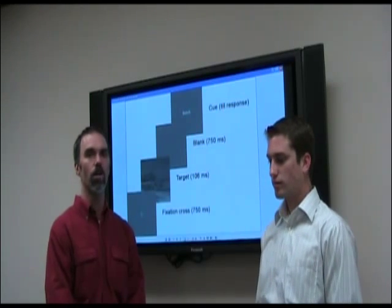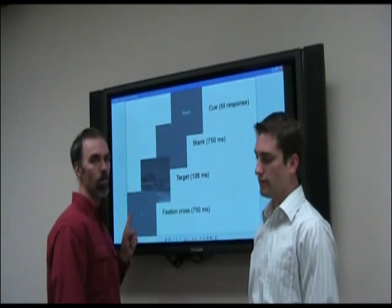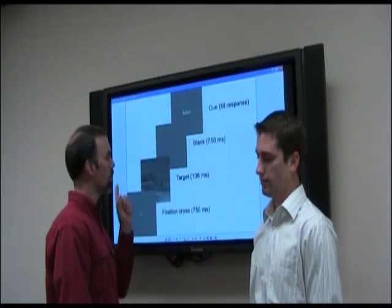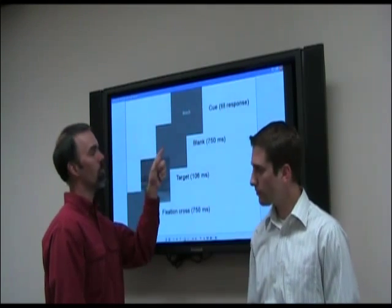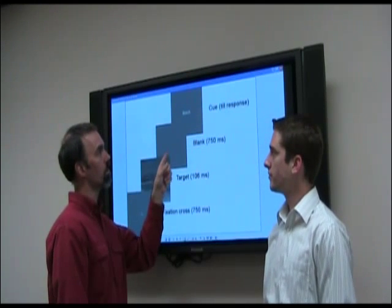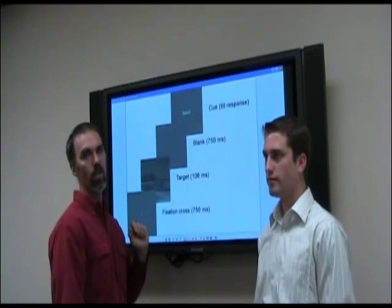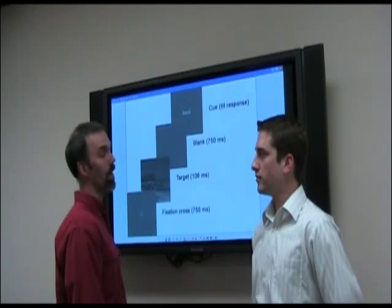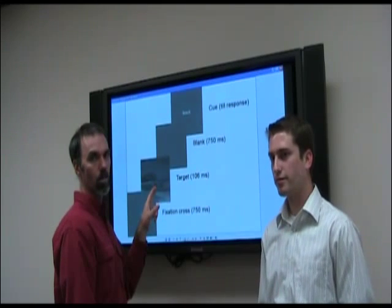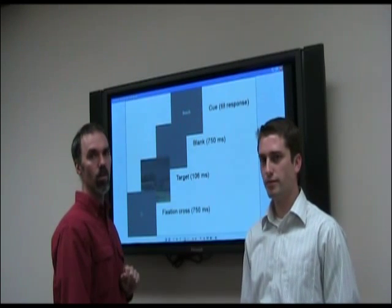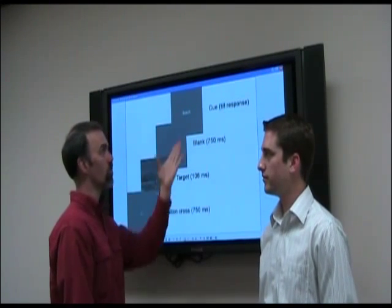To tell you a little bit more about our methods: we briefly presented the images. First we began with a fixation cross at the center of the screen, then we briefly flashed the images for about 100 milliseconds, then we had a blank for about three quarters of a second. Then we presented a one-word label, which was our cue, until they gave a response. The cue could either match the category of the target — in this case it says 'beach,' which matches the target image, so the person should say yes — and 50% of the time the cue would not match; it would come from a different category, such as 'street.'